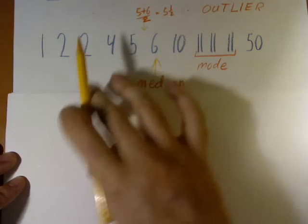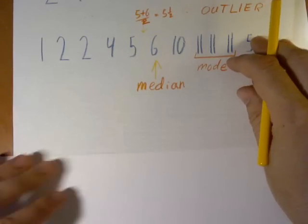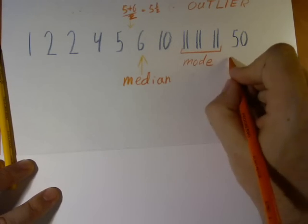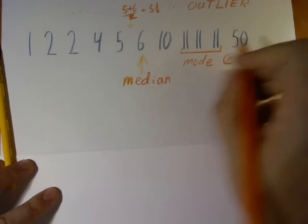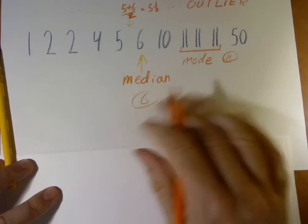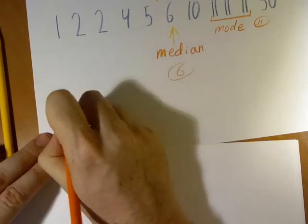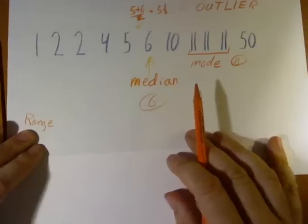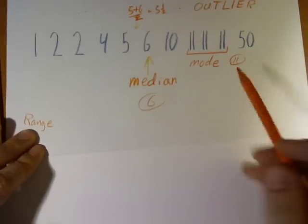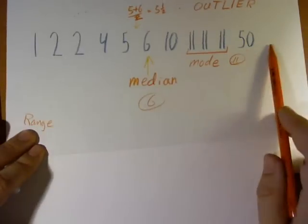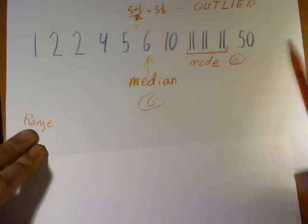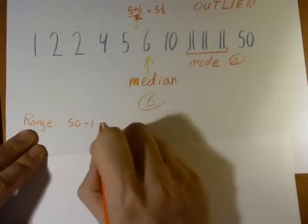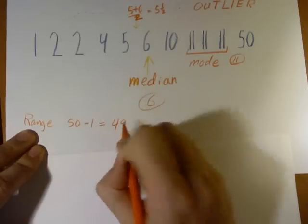Now, our range. The mode is 11, the median is 6, and for the range, we want to know how widely our numbers range. They range all the way from 1 up to 50. So we do 50 minus 1, which gives us 49. 49 is our range.